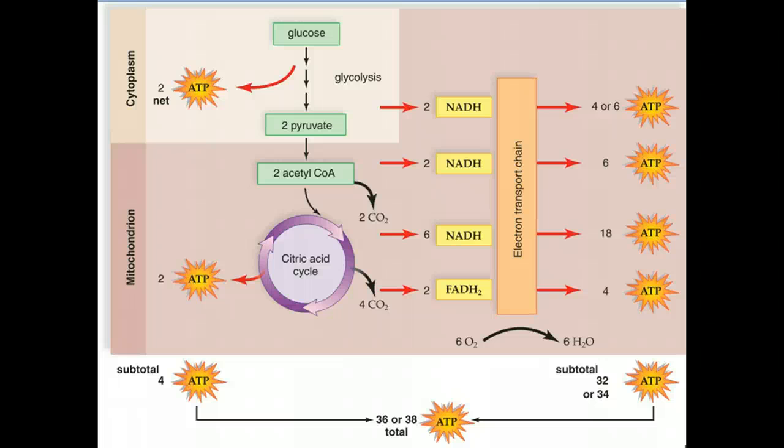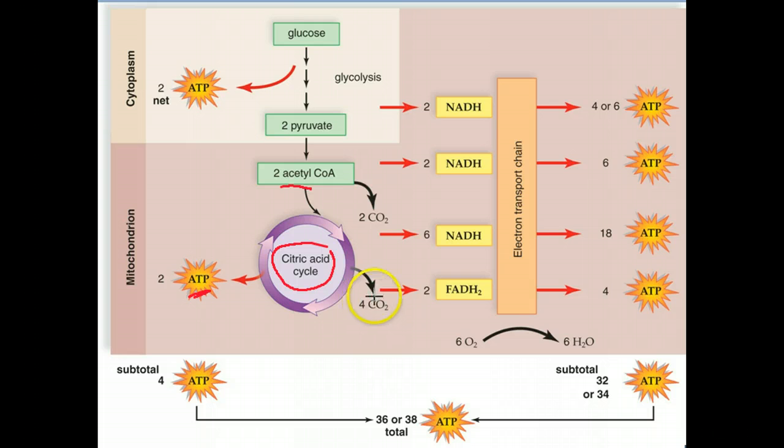So to somewhat help summarize this slide, what we just talked about was the Krebs cycle, also known as the citric acid cycle. We started out with two molecules of acetyl-CoA. We gave off some ATP. But more importantly, we've created FADH2 and NADH, and these have moved on to the electron transport chain.